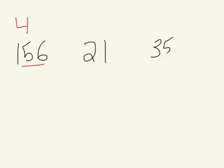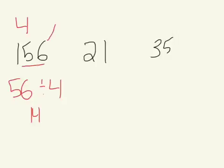So here's how it works. We look at 56 — is 56 divisible by 4? In this case, we know that 56 is divisible by 4 because 56 divided by 4 equals 14. So because 56 is divisible by 4, that means that 156 is divisible by 4.